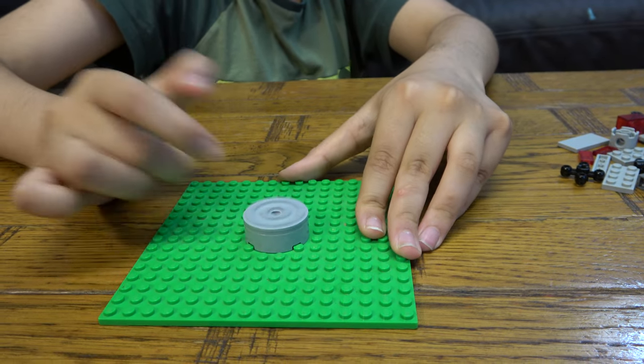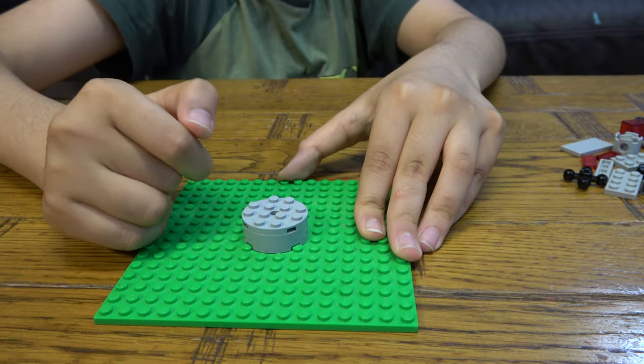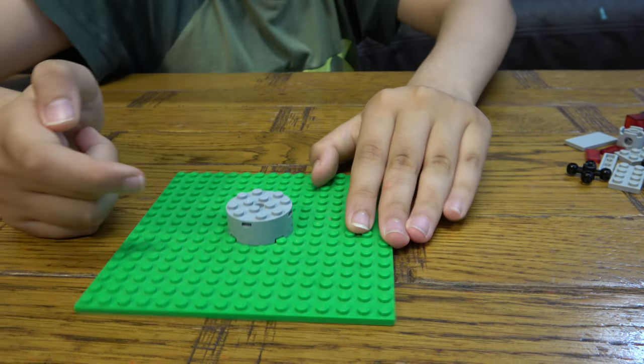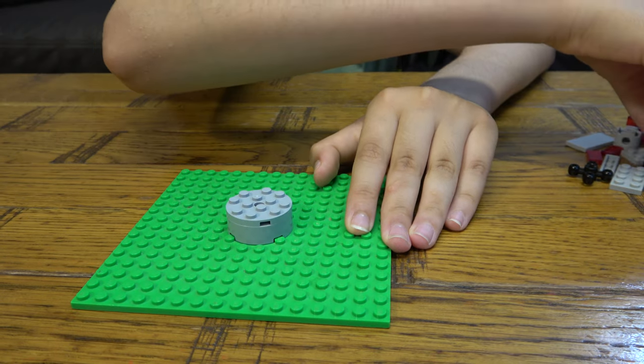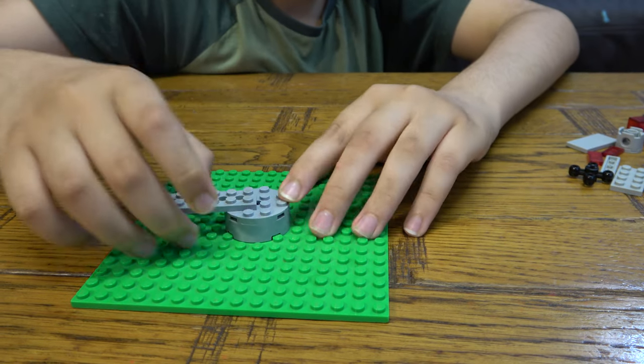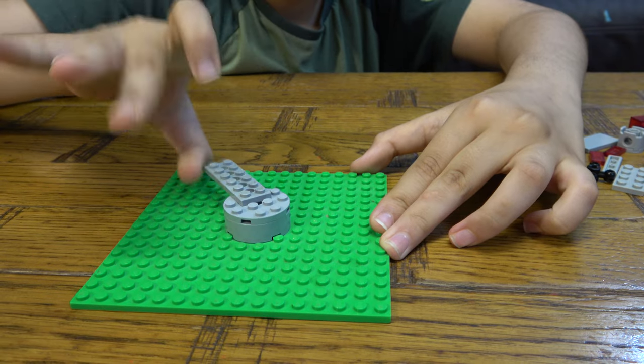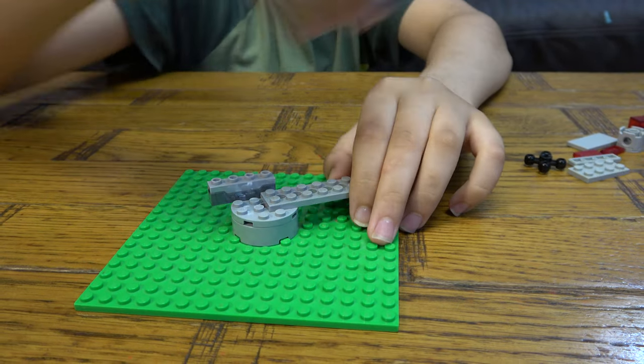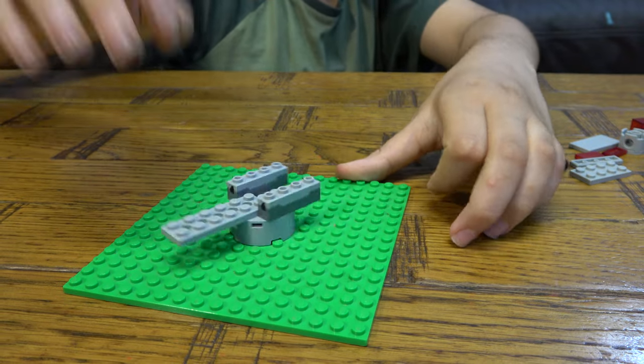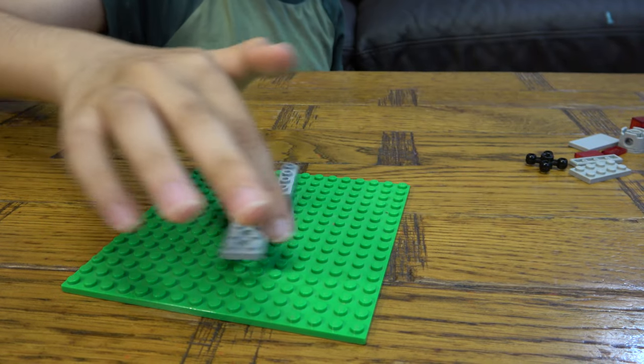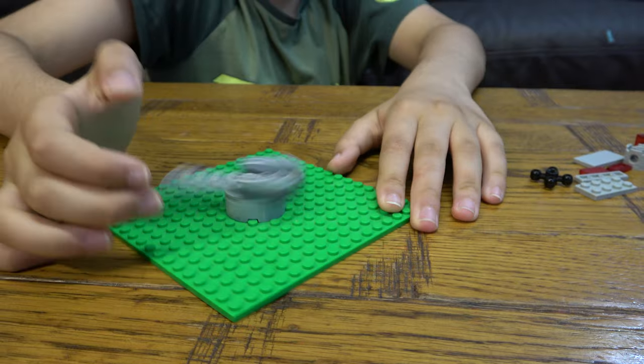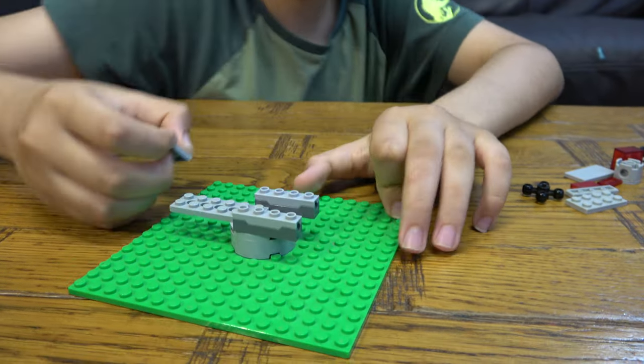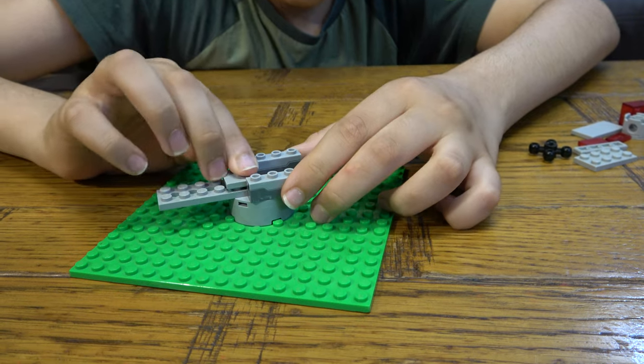There you go, that spins. So next we're going to get this here, and then we're going to get these two like that. Now I can spin it around. Let me get these.